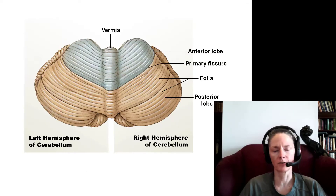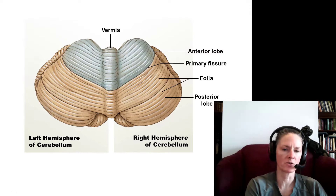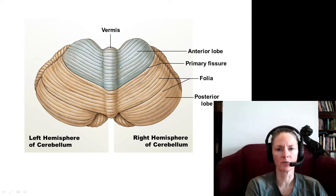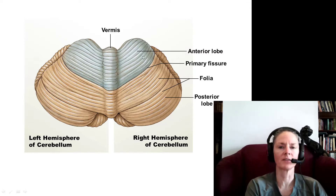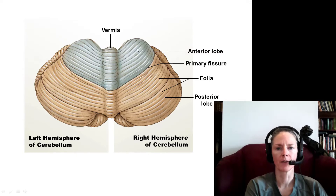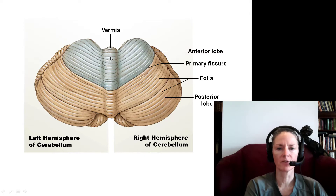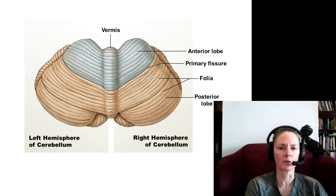Here we have an inferior view, and we can see some major anatomical features on the surface. We have two major lobes visible on the surface and another one only seen in sagittal view. We have the anterior lobe, shown here in blue, separated from the posterior lobe by the primary fissure. We also have this midline structure called the vermis, which segregates the left and right hemispheres. Vermis is Latin for worm, and you can see why anatomists would think it looks like one.